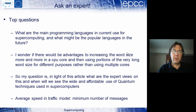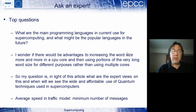The second top question was quite interesting and liked quite a lot. It asked whether there would be advantages to increasing the word size more and more on a CPU core, and then using portions of the very long word size for different purposes, rather than using multiple cores. So rather than having two cores each doing their own thing, you'd have an extra long instruction which encoded lots of things at once.